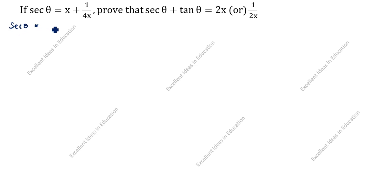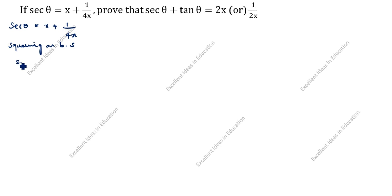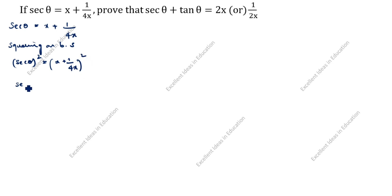What is given in this question? Secant theta is equal to x plus 1 by 4x. We square both sides: secant theta the whole square is equal to x plus 1 by 4x, the whole square.